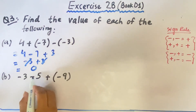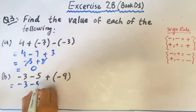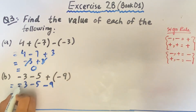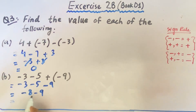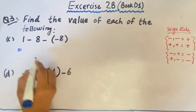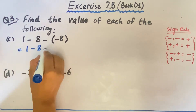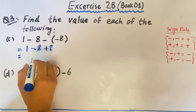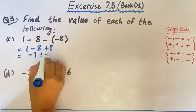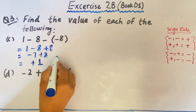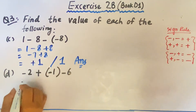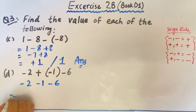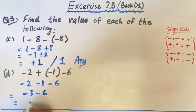In part B, we open the bracket: minus 3 and minus 5 remain the same, and plus minus minus 9. All are minus, so we add all of them — minus minus equals plus — giving minus 8 and minus 9. We add them both with the minus sign attached, so minus 17 is the answer. In part C, 1 and minus 8 remain the same, and minus minus equals plus 8. So we have positive 1 and negative 8, answer is minus 7, and plus 8. Final answer is plus 1. In part D, minus 2 remains the same, plus minus minus 1, minus 6. Minus minus equals plus, giving minus 3 minus 6, and the answer is minus 9.